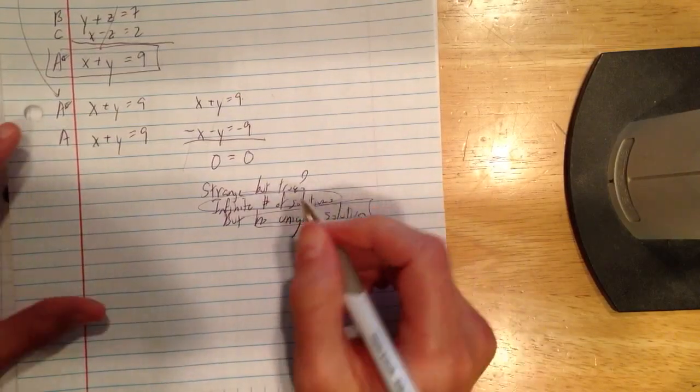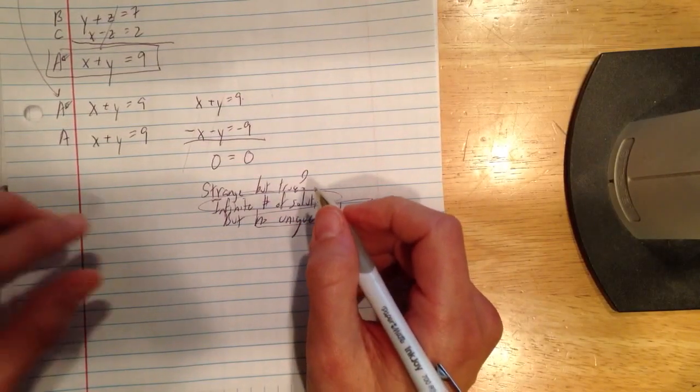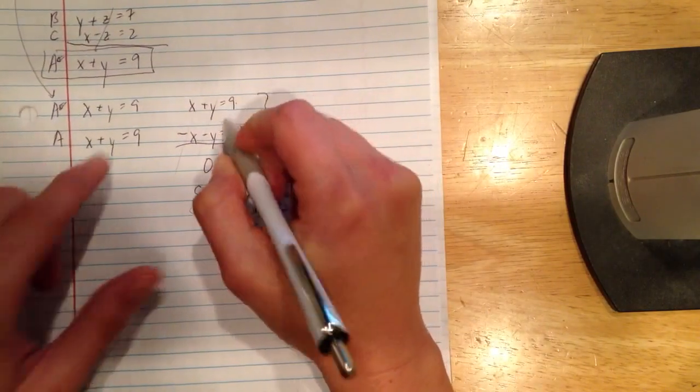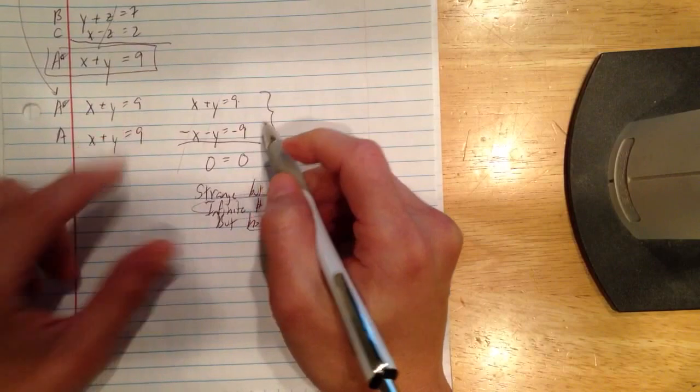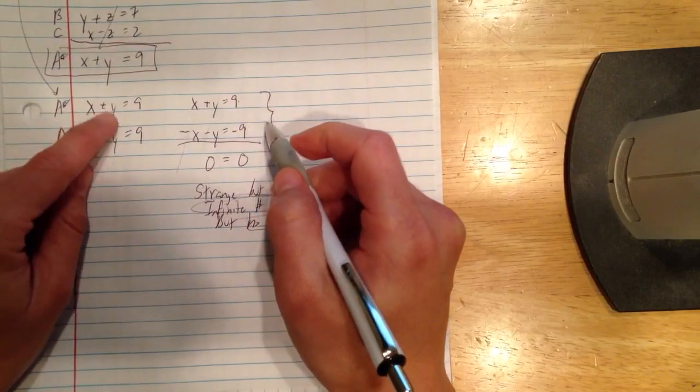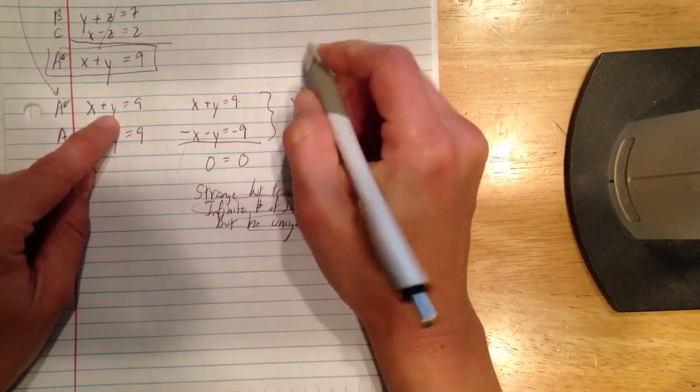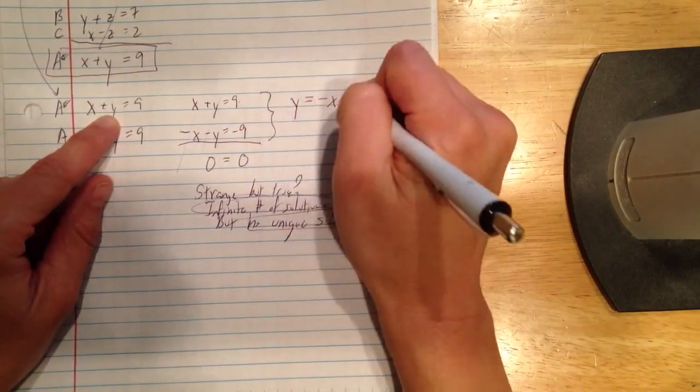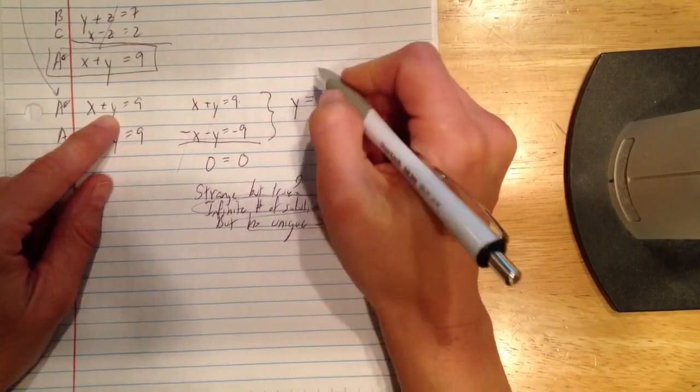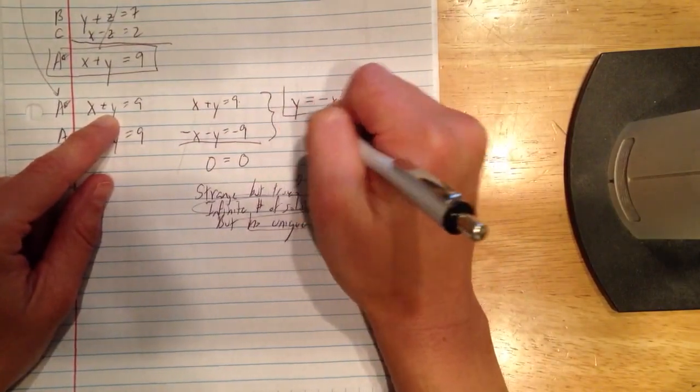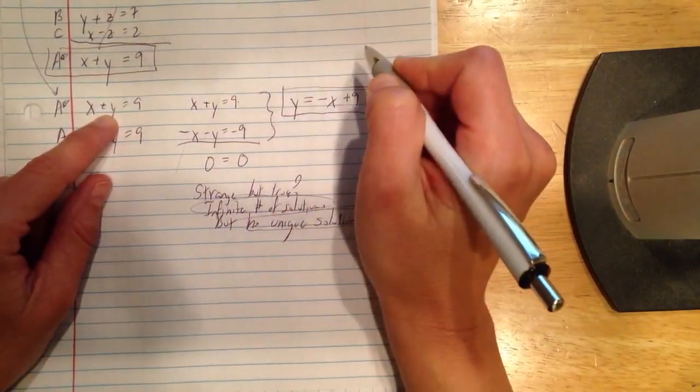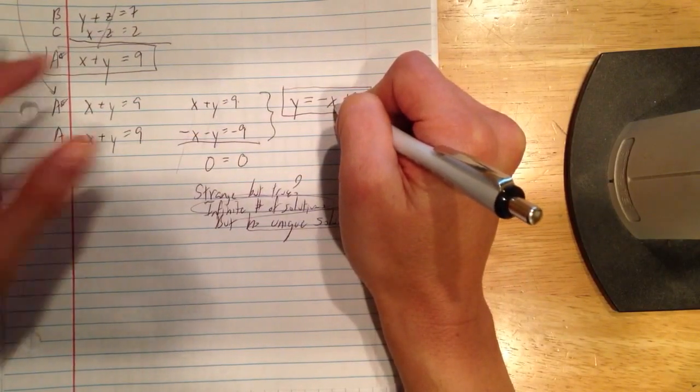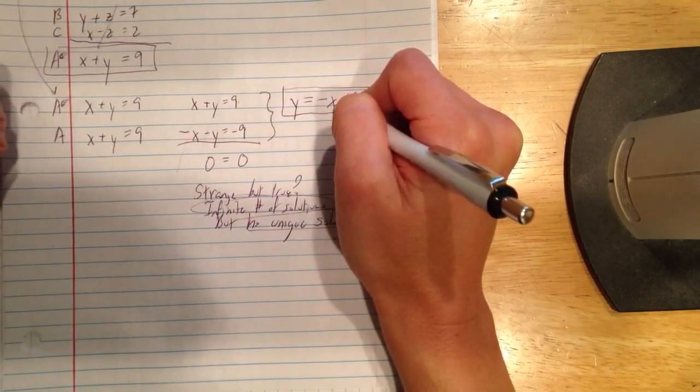But some classes just have you stop here and say just no unique solution. But hey, if we're going to say there's an infinite number, let's go find them, right? So now, if you had an infinite number, you would go back to one of these equations you just used, one of the equations with the two unknowns, and solve for one of the variables. So I'm going to say that y equals negative x plus 9. So if y equals negative x plus 9, and I let x be whatever it wants to be, then I just need to know what z is.